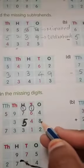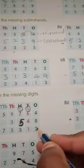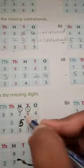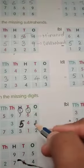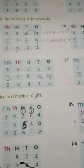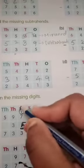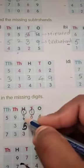Let's get started. 8 plus 4 is 12, so write 2 and carry 1. 6 plus 1 is 7. 7 plus 4: 8, 9, 10, 11. So again 1 carry here.